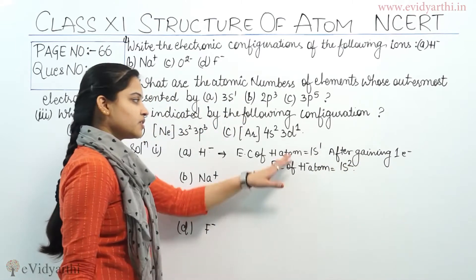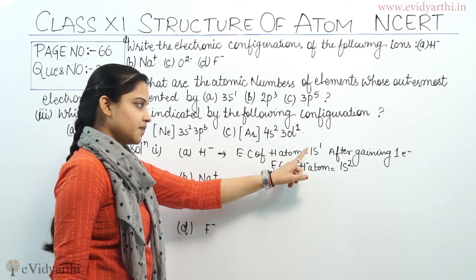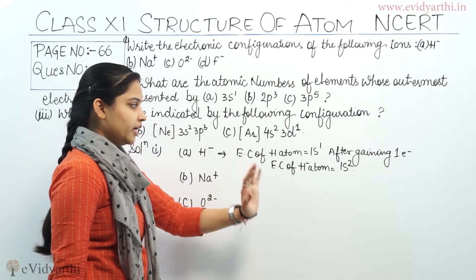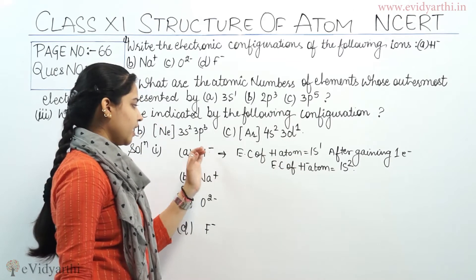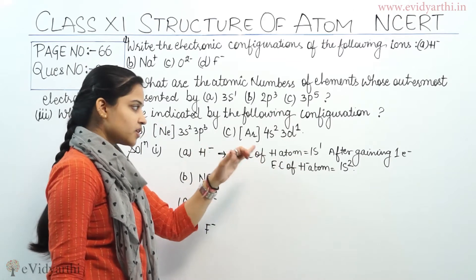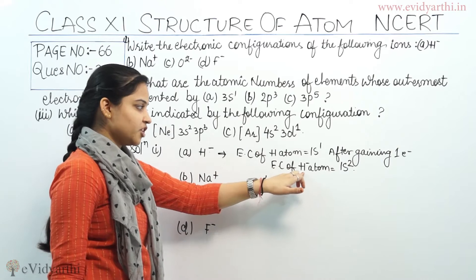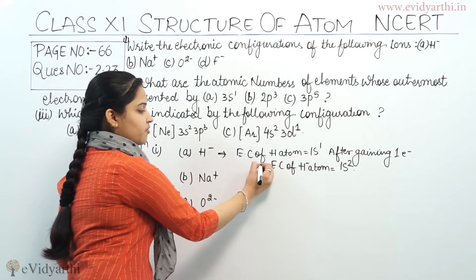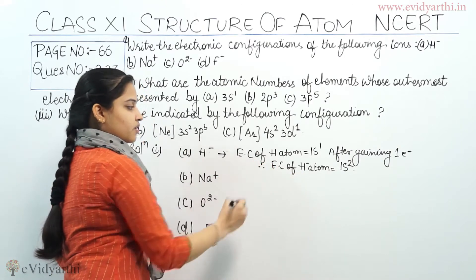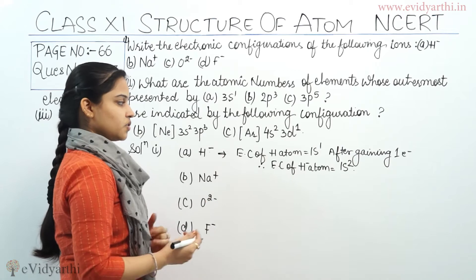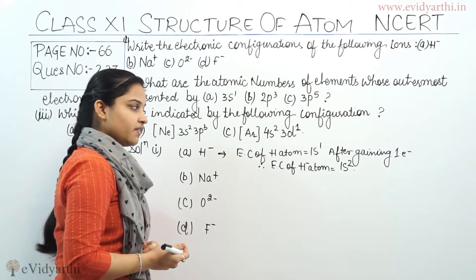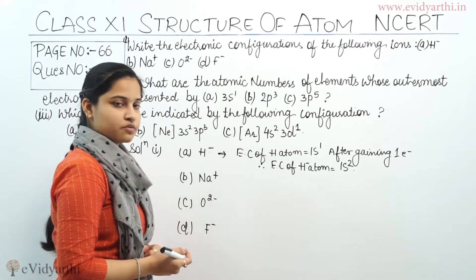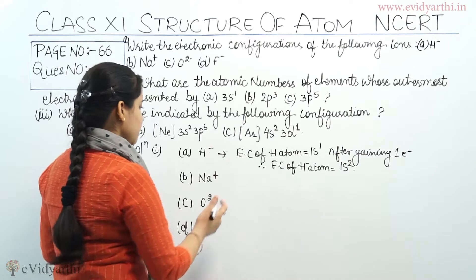After gaining one electron, the electronic configuration of H negative atom is equal to 1s2. Hydrogen atom, which had no charge, after gain of one electron becomes H negative atom. Therefore, electronic configuration of H negative atom is equal to 1s2.